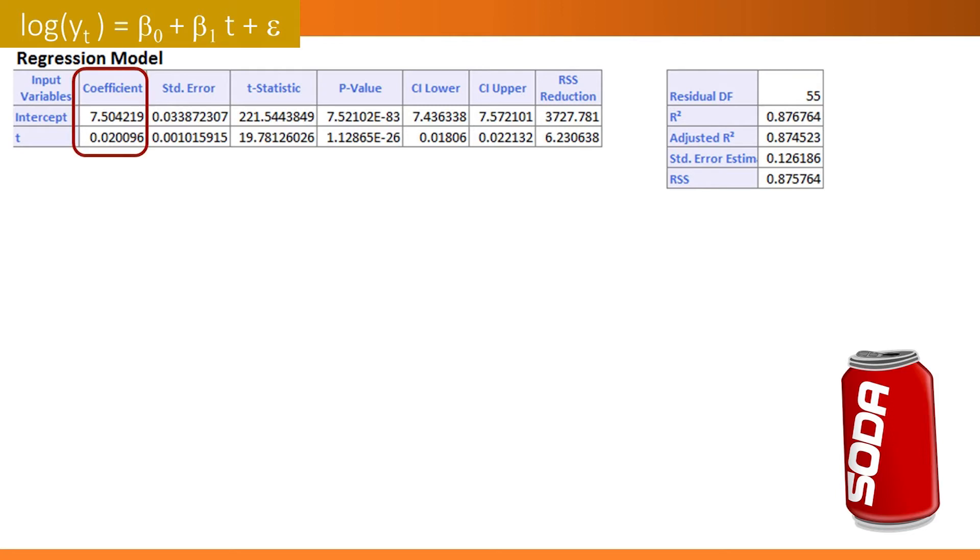For example, if we use the coefficients of this model to generate forecasts, then we'll get log of forecasts. To get dollar amounts, we need to take an exponent of these numbers. After transforming forecasts back into the original scale, we can compute forecast errors.